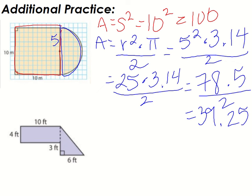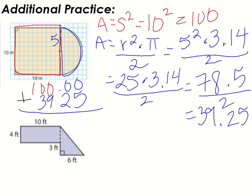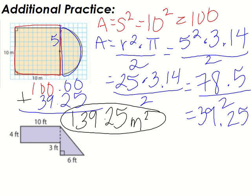So there are my two pieces. I'm going to take my 100 and add it to my thirty-nine and twenty-five hundredths, and we get a hundred and thirty-nine and twenty-five hundredths millimeters squared. Remember, area is units squared because you're taking two measurements and multiplying them together — unit times a unit gets you units squared. That's why area is always units squared.